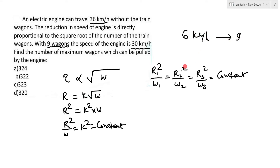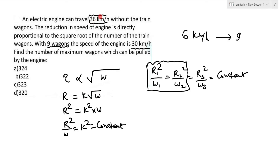The question asks: find the number of maximum wagons which can be pulled by the engine. This means we take the speed reduction to its maximum — up to 36 km/h, meaning the train comes to a stop. We calculate the wagons needed for that, then subtract one wagon, so the train still moves at some minimum speed.